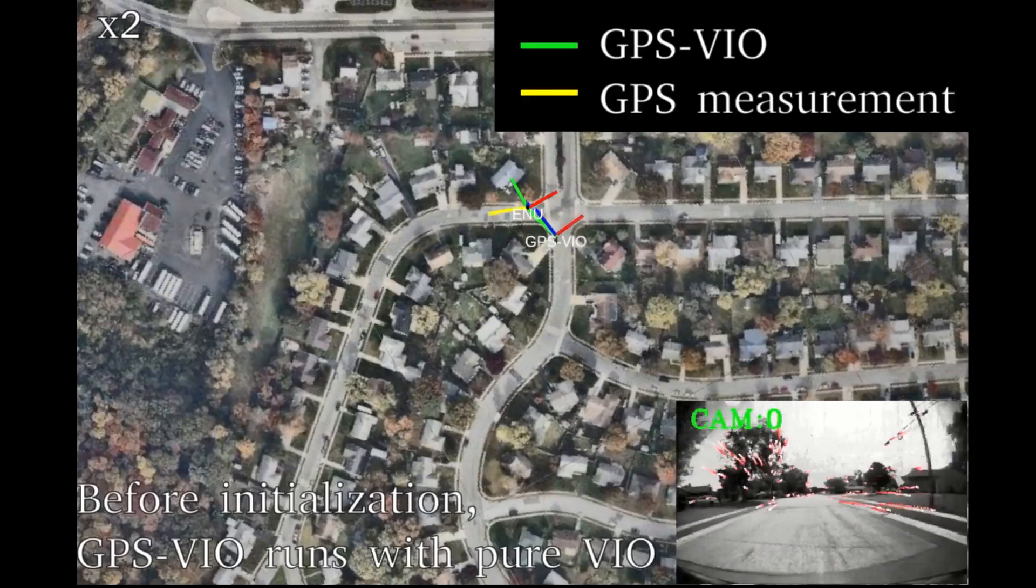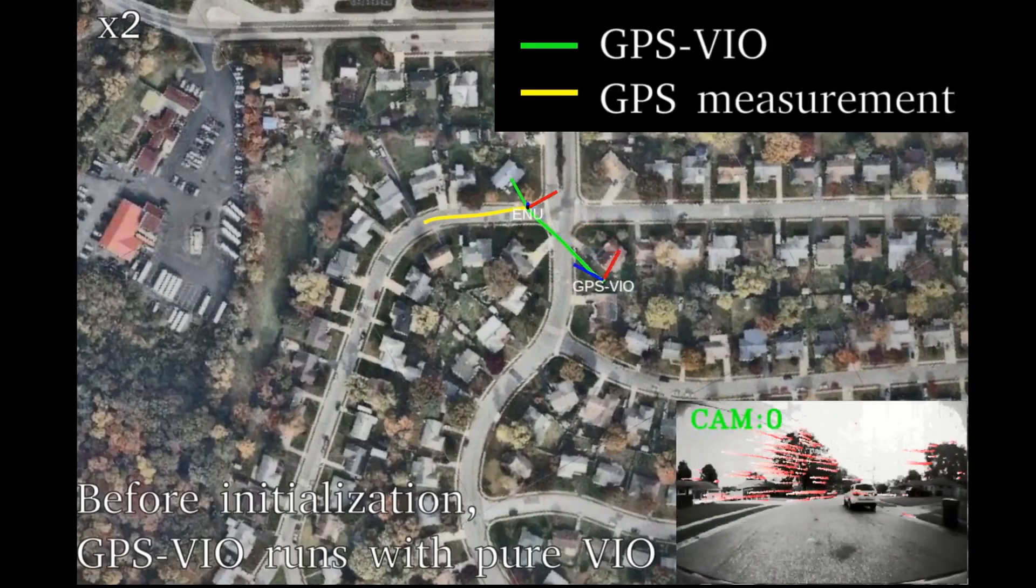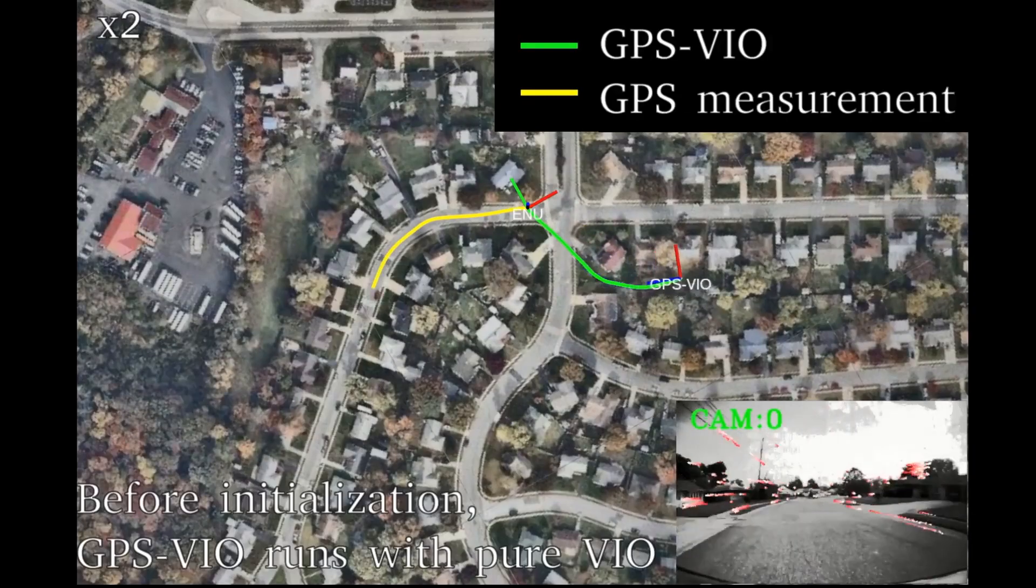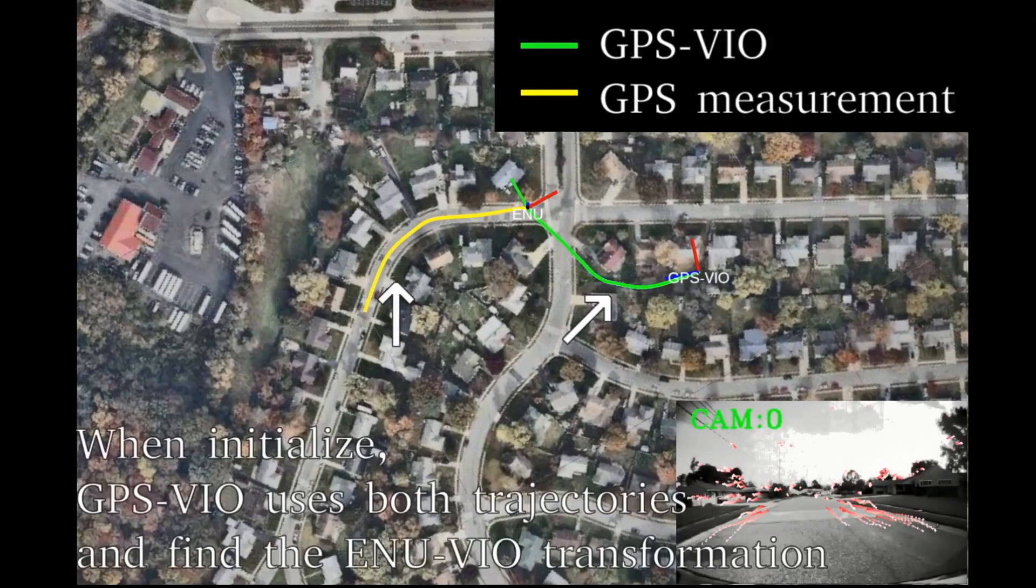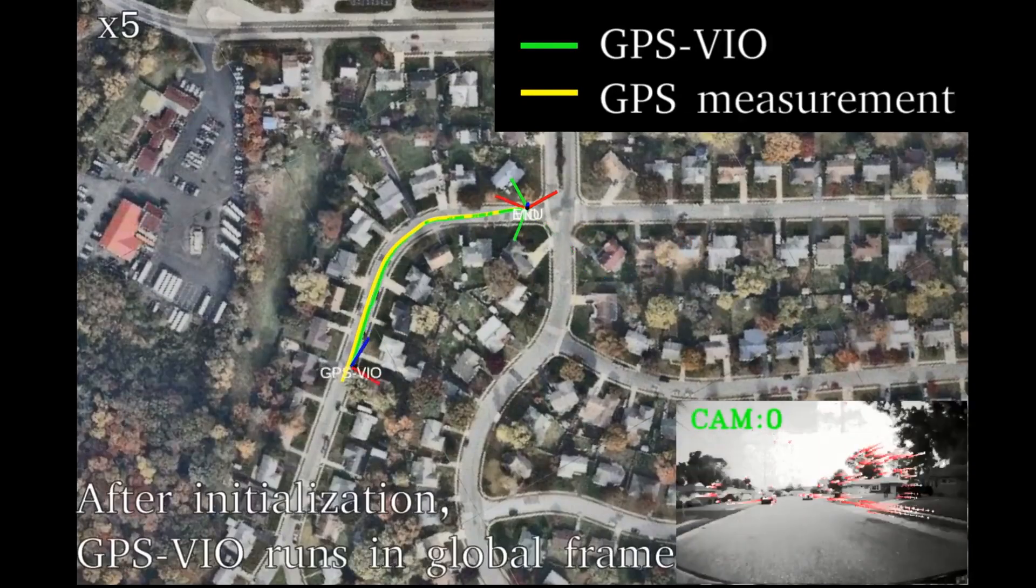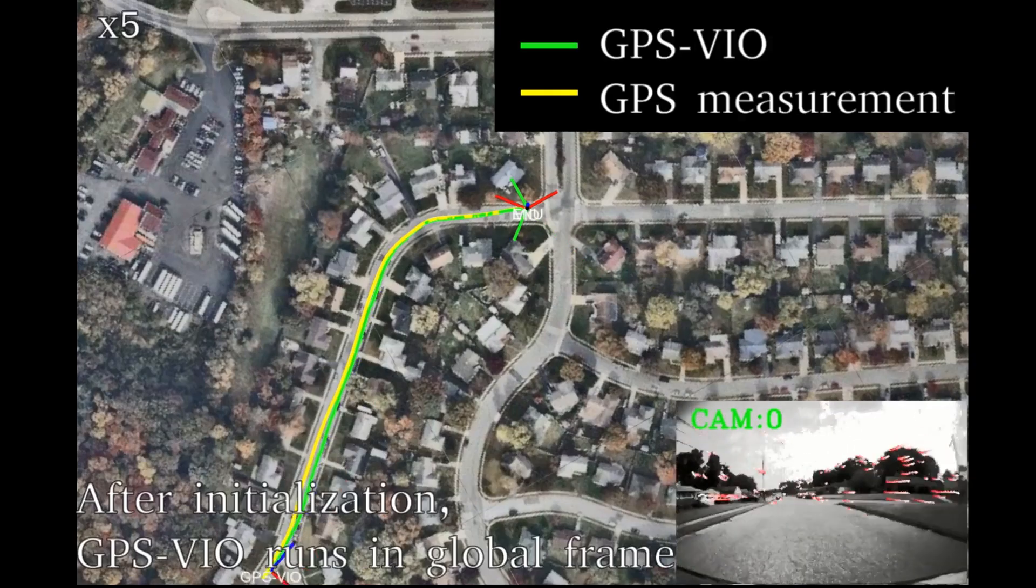Here is a video that summarizes our initialization method with real dataset. The green line shows the pure VIO estimation trajectory and the yellow line is the GPS measurement. When initialized, we use two-stacked trajectory to find the reference frame transformation as described in the previous slides.